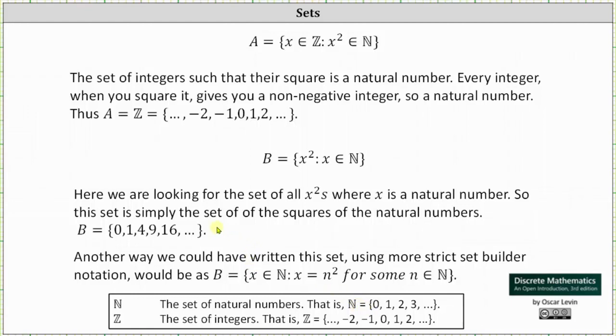Another way to express the same set using different set builder notation is shown below, where set B is the set of all natural numbers x such that x equals n² for some n, which is a natural number. I hope you found this helpful.